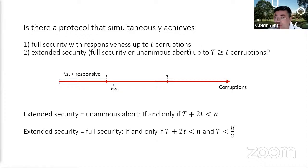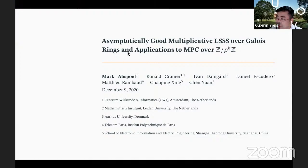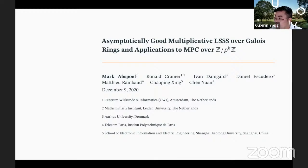Thank you, Chen Da, for the presentation. We will move to the next one. The next presentation is asymptotically good multiplicative LSSS over Galois rings and applications to MPC over Z_{p^{2k}}. The authors are Mark Abspo, Ronald Cramer, Ivan Damgård, Daniel Escudero, Matthew Rambot, Chao Pingxing, and Chen Yuan. Mark will give the presentation.